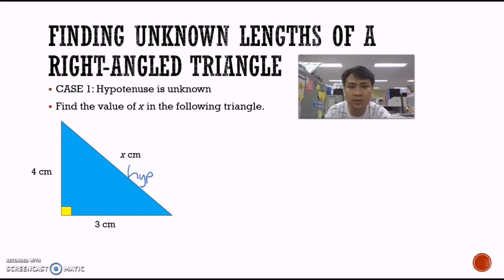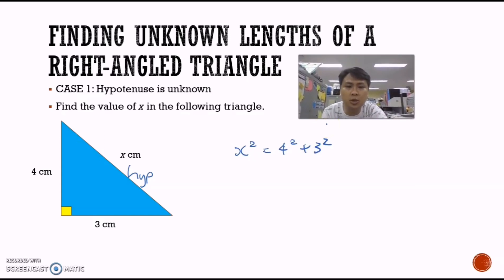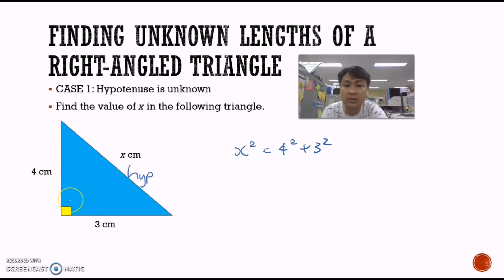To apply our formula, we use C squared equals A squared plus B squared, and we always start with the longest length — in this case, x. So we apply the formula: x squared is equal to 4 squared plus 3 squared. The choice of a and b does not matter, since 4 squared plus 3 squared is the same as 3 squared plus 4 squared.